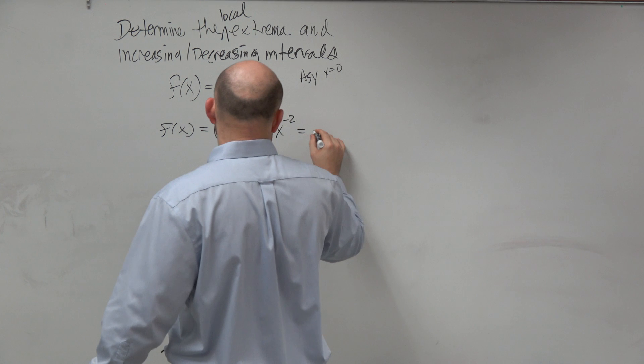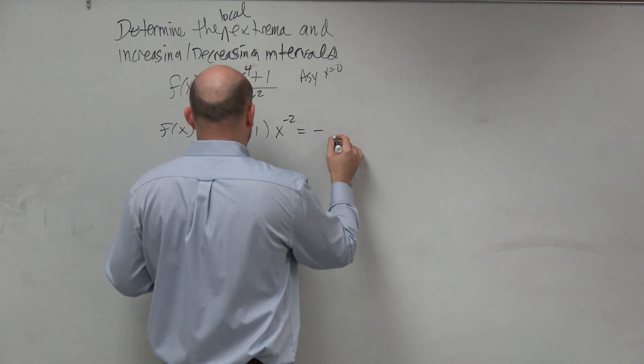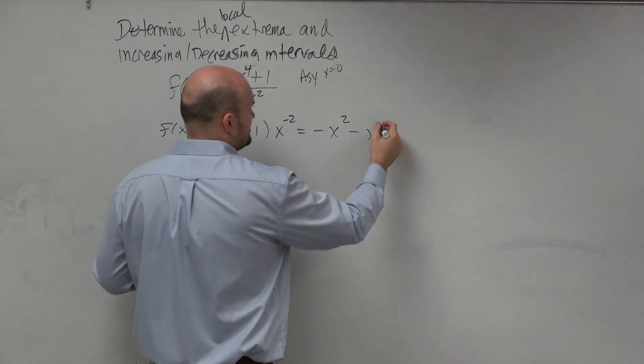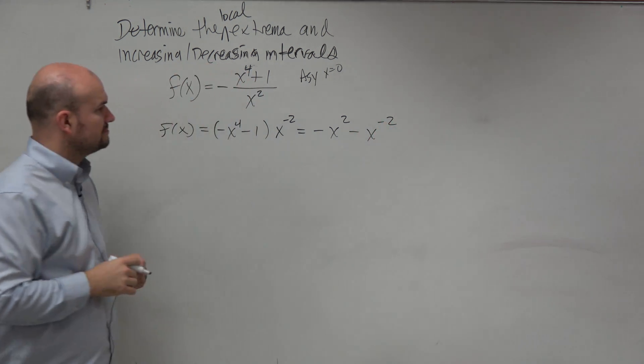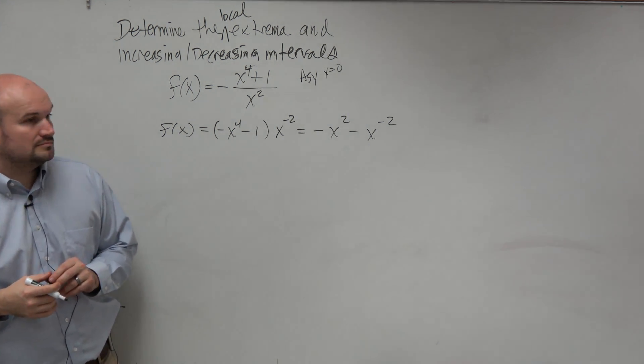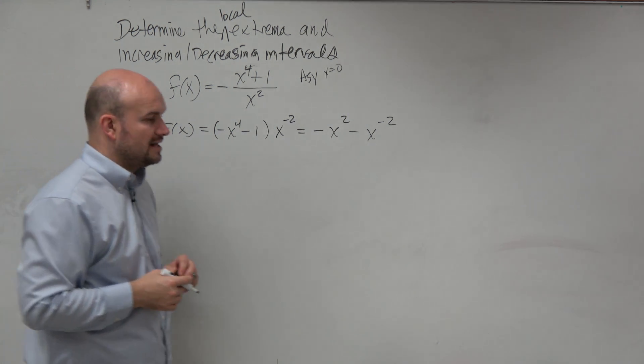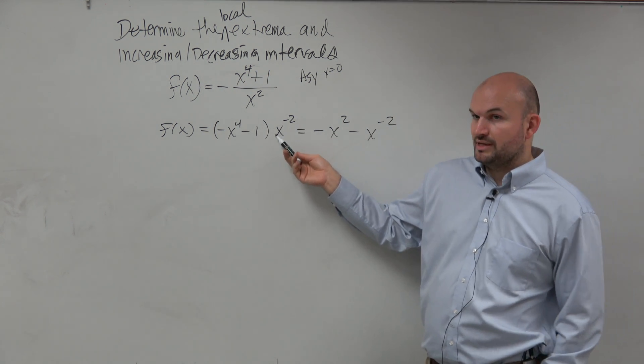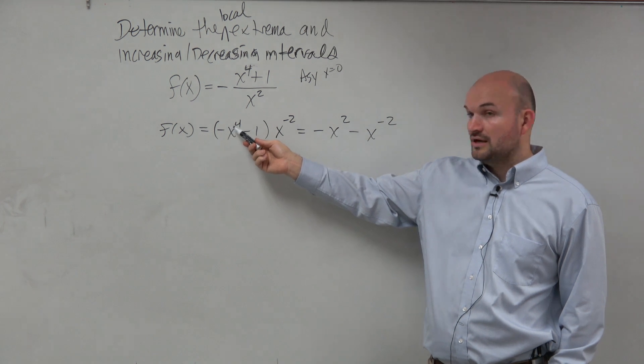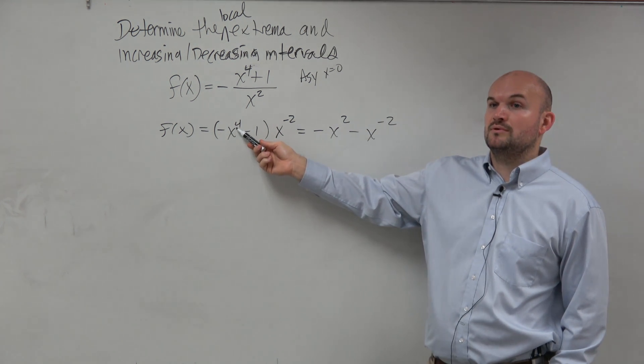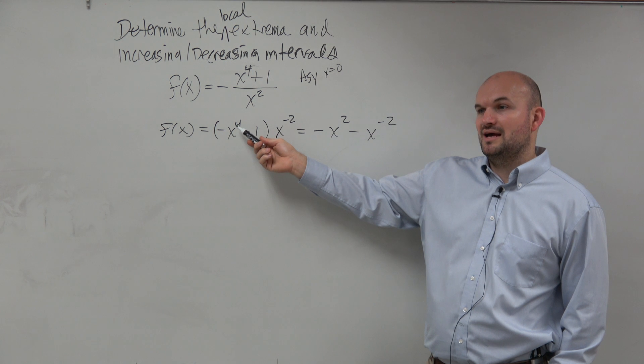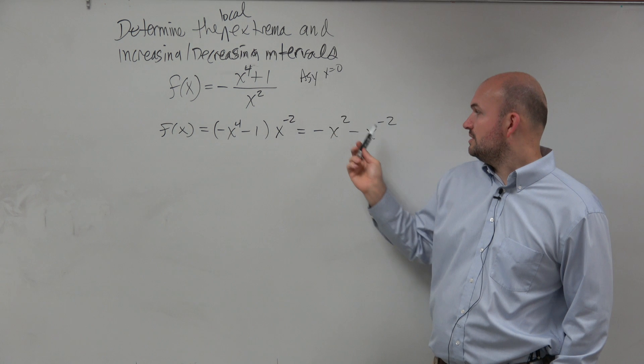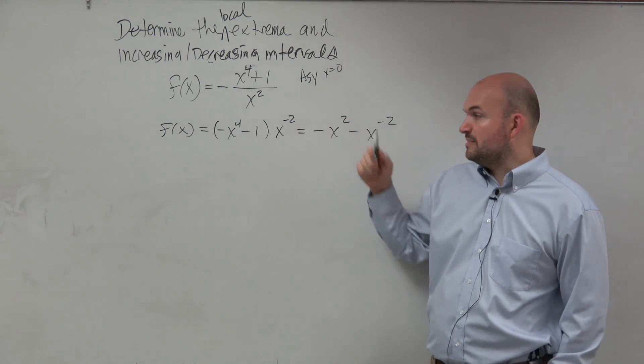If I go ahead and simplify this, remember you're going to add the power. So that's going to be negative x squared minus x to the negative second. I distributed x to the negative second times x to the fourth. Remember, when you multiply exponents, you add the powers. So 4 plus negative 2 is just 2. And then x times negative 1 is just negative x.